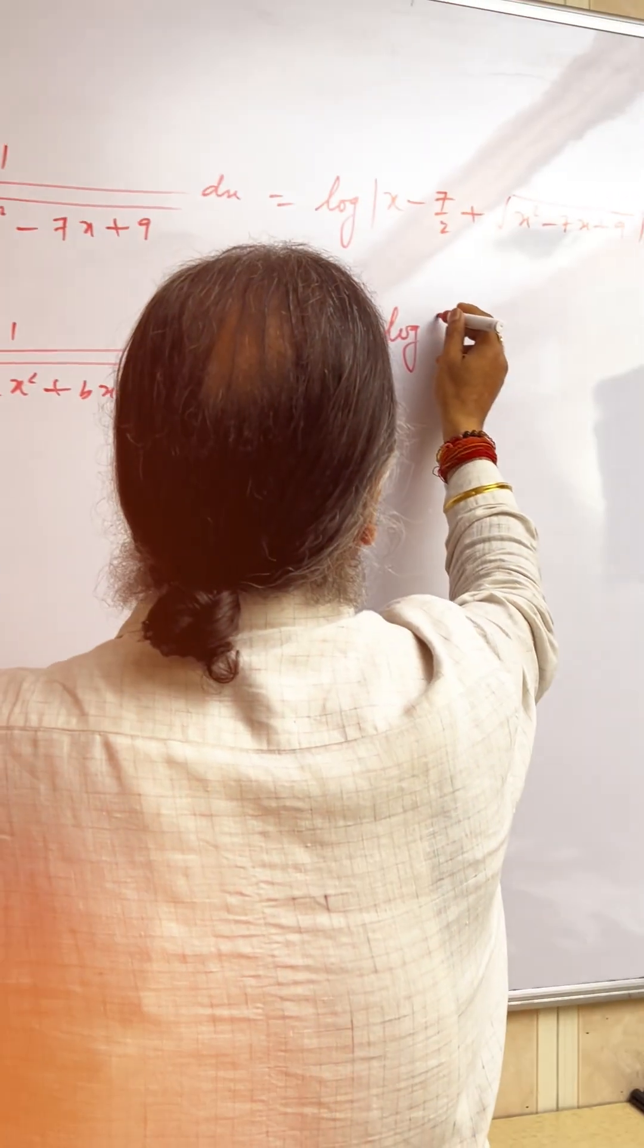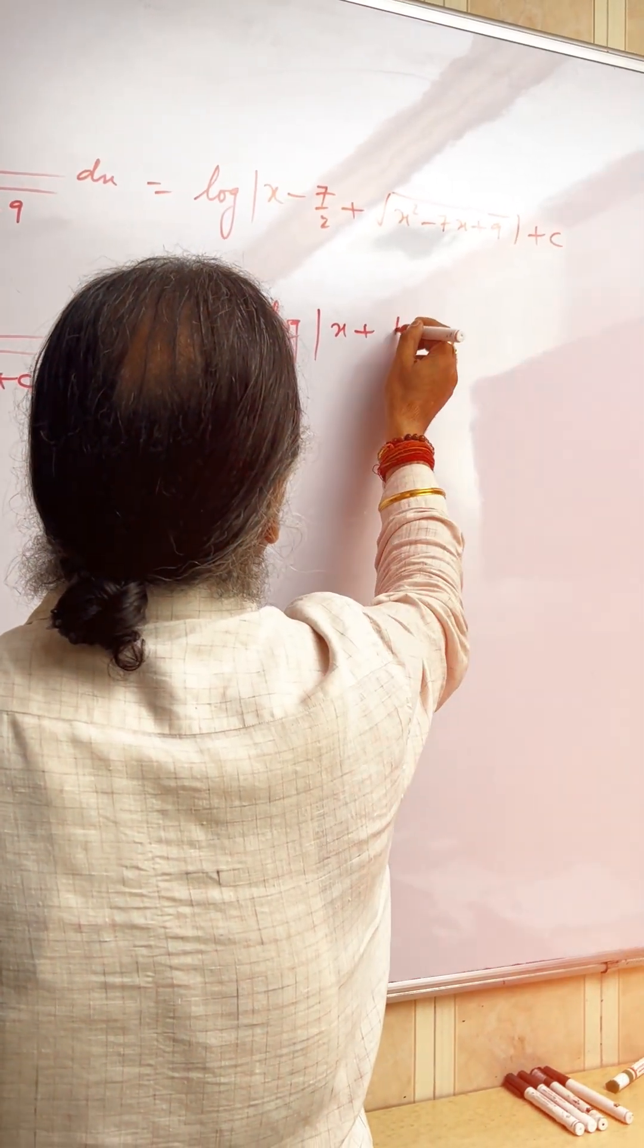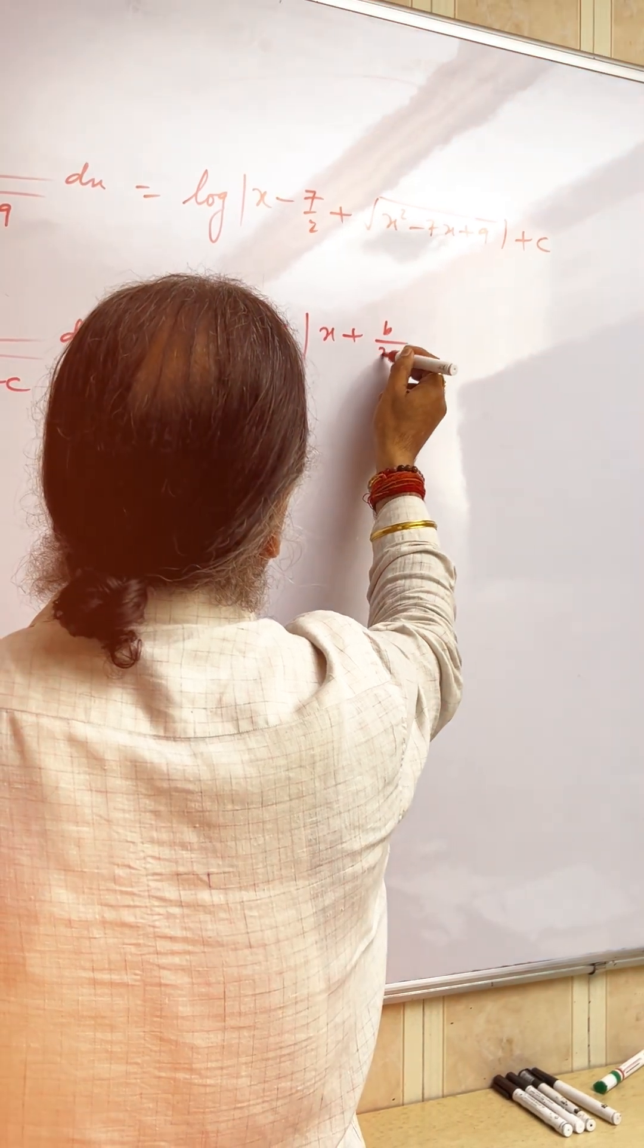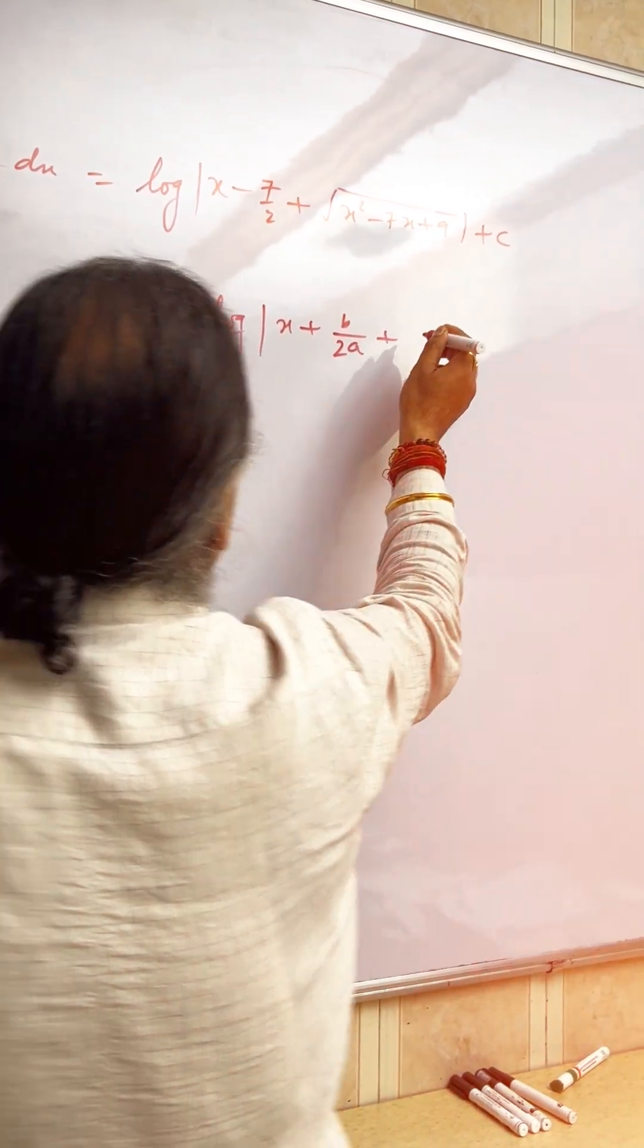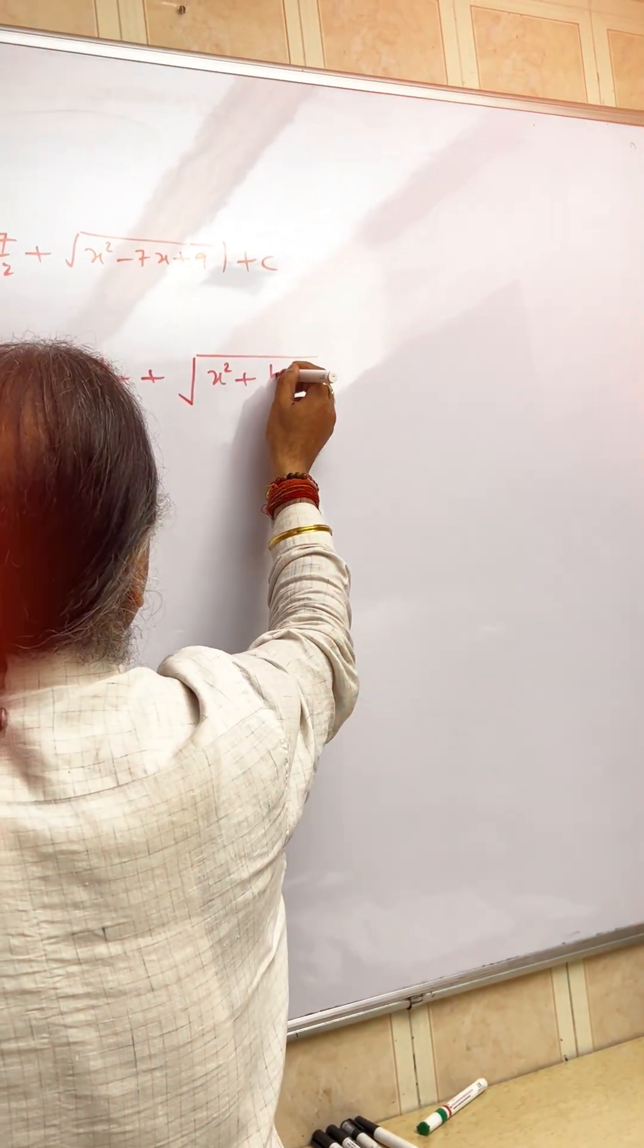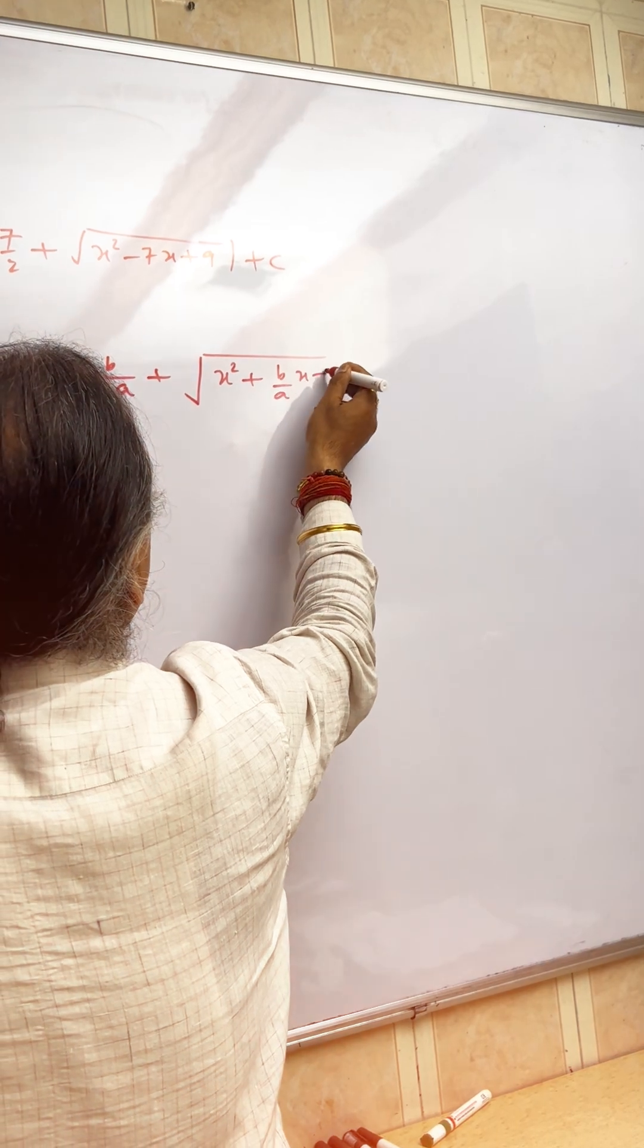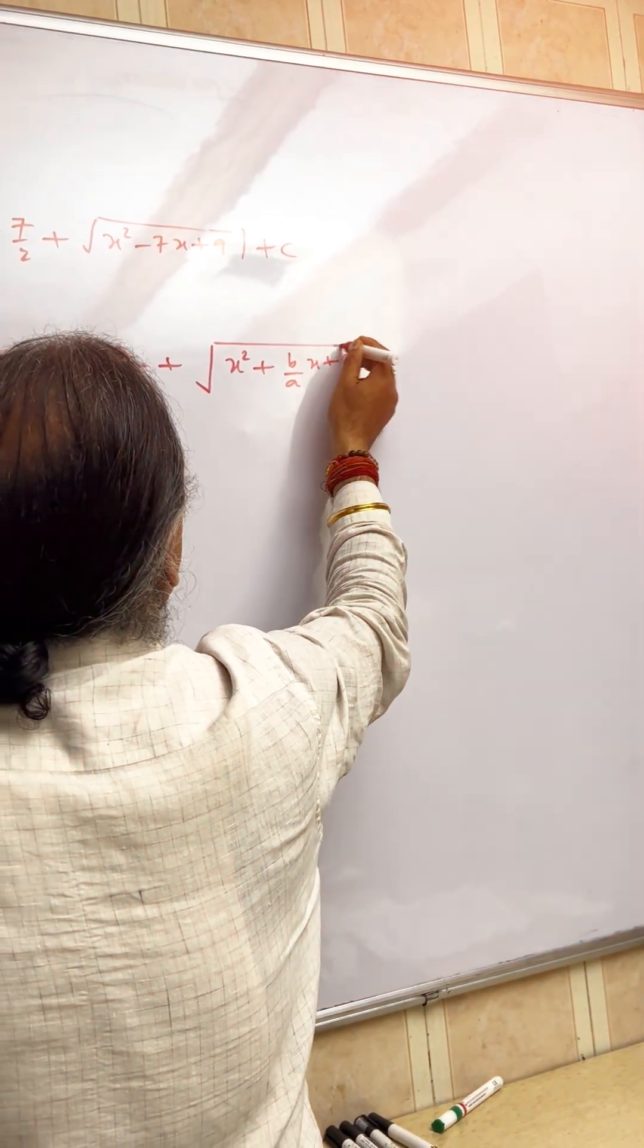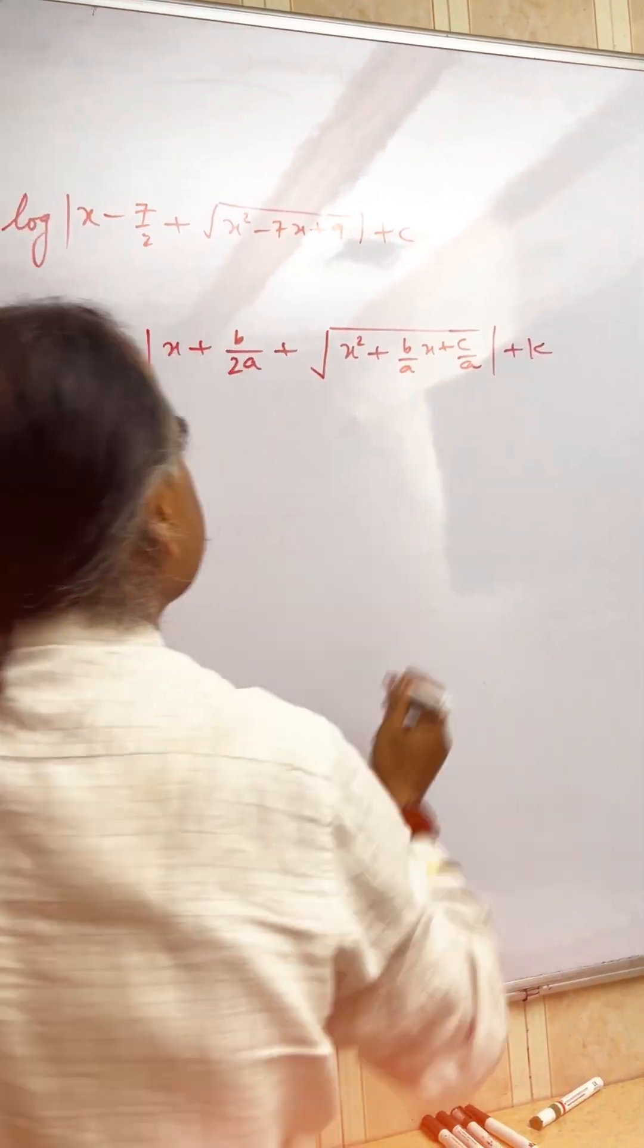So x plus b by a half, that is 2a, plus entire root as it is. After taking a outside, it is what? x square plus b by a x plus c by a plus constant of integration.